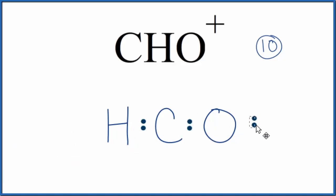Then we can complete the octet on the oxygen. So far, we've used 6, 8, and there's 10. So we've used 10 valence electrons for our CHO plus Lewis structure.